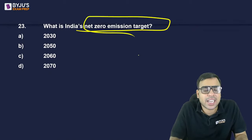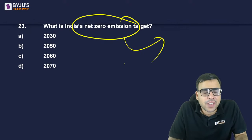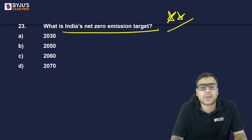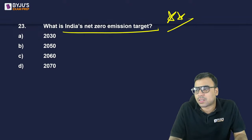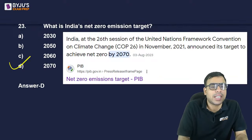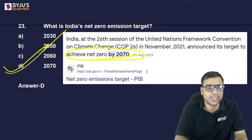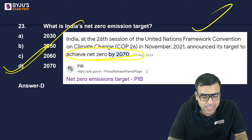What is India's net zero emission target year? 2030, 2050, 2060, or 2070? Net zero emission target means that whatever amount of carbon dioxide we produce, we will absorb it back with the help of forests. India's net zero emission target is 2070 — D is the right answer. We announced it at COP26.